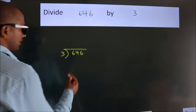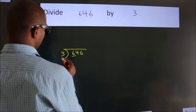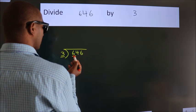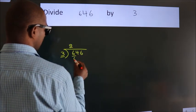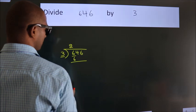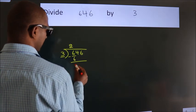Next, here we have 6. Here 3. When do we get 6? In 3 table. 3 2s, 6. Now we should subtract. We get 0.